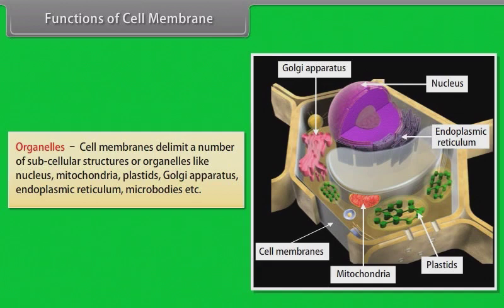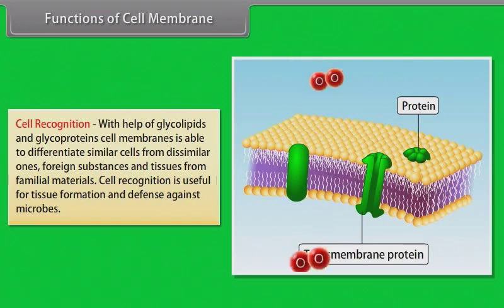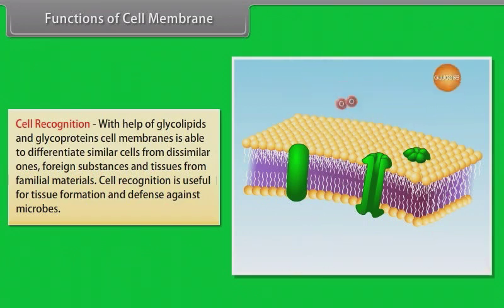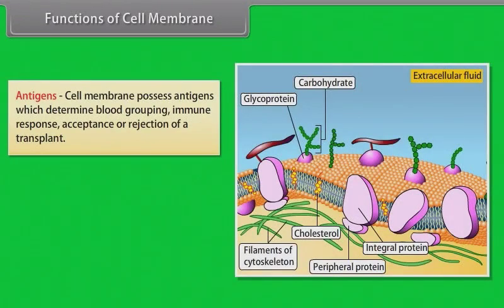Organelles — cell membranes delimit subcellular structures or organelles like nucleus, mitochondria, plastids, Golgi apparatus, endoplasmic reticulum, microbodies, etc. Cell recognition — with the help of glycolipids and glycoproteins, the cell membrane is able to differentiate similar cells from dissimilar ones, and foreign substances from familiar materials. Cell recognition is useful for tissue formation and defense against microbes. Antigens — the cell membrane possesses antigens which determine blood grouping, immune response, and acceptance or rejection of a transplant.